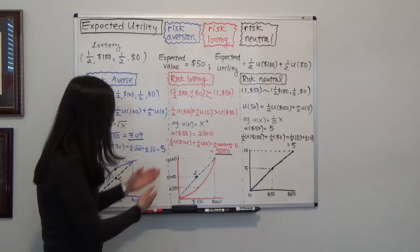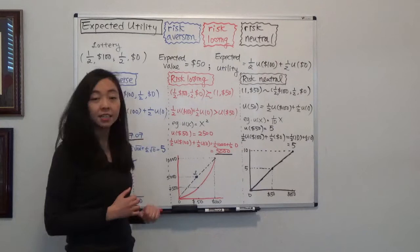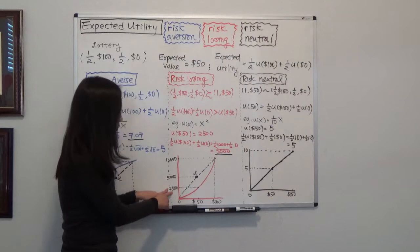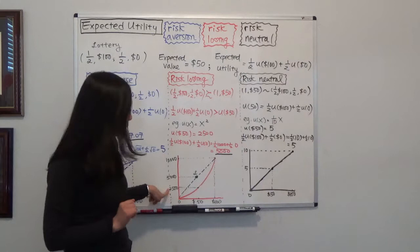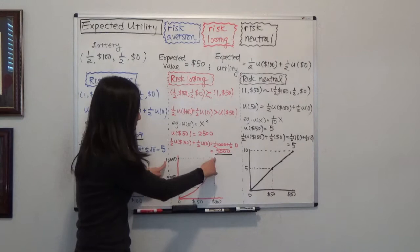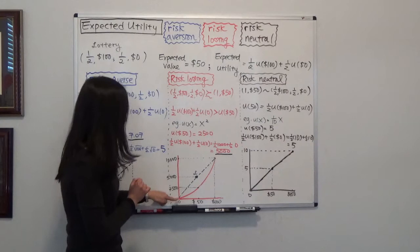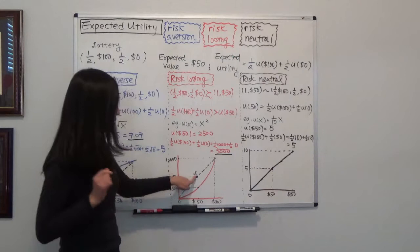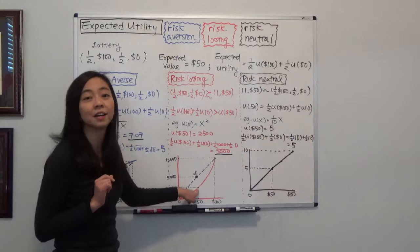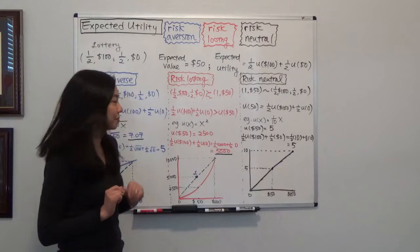Graphically, you can see the utility function, and the utility of $50 for sure is $2,500. The expected utility of the lottery is one half times $10,000 plus one half times zero, which gives you $5,000. This is higher than the utility of $50 for sure, and that's what it means to be risk-loving.